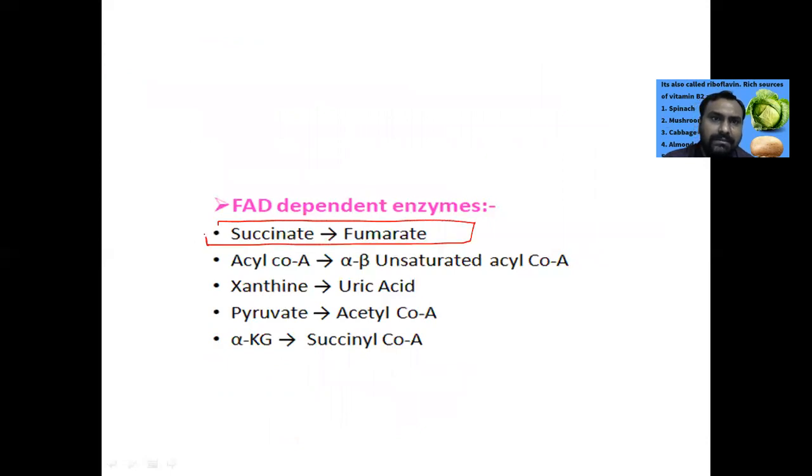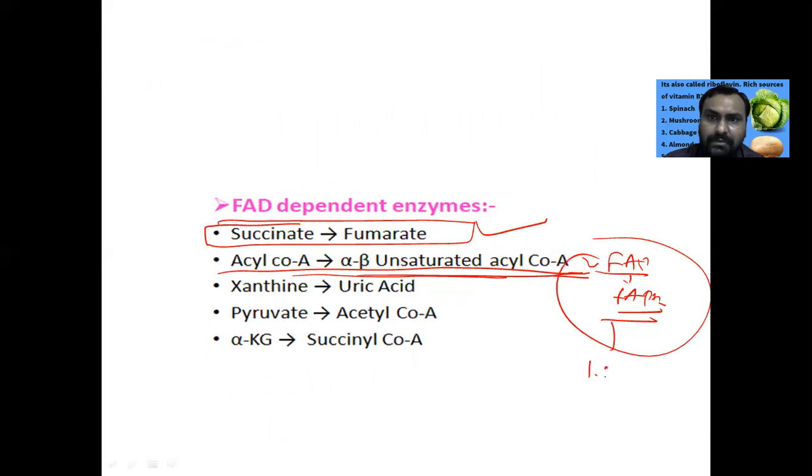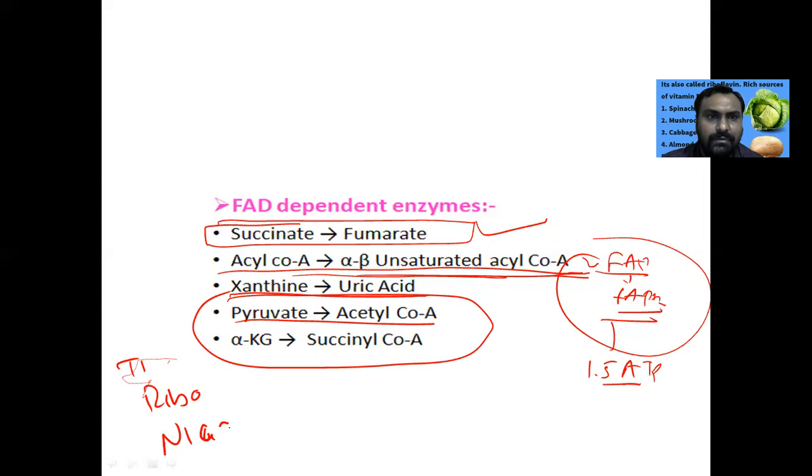These are the reactions. In the TCA cycle, succinate is converted to fumarate and FAD is converted to FADH2. In fatty acid oxidation, acyl-CoA is converted to alpha-beta unsaturated acyl-CoA and FAD is converted to FADH2. In electron transport chain, FADH2 will give 1.5 ATP. Xanthine to uric acid by xanthine oxidase requires FADH2, and pyruvate to acetyl-CoA and alpha-ketoglutarate to succinyl-CoA. You have to remember this in thiamine, riboflavin, and niacin.